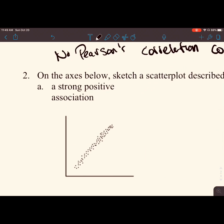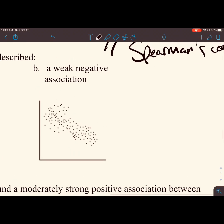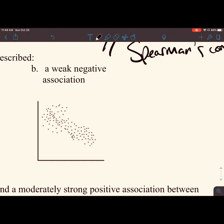We want our dots closely grouped together in a linear fashion and in a positive direction, so right and up. A weak negative association - hopefully you drew something different, but we want more scatter in our plot, in our dots, in our scatter plot, and we want them to be going in a downward direction.